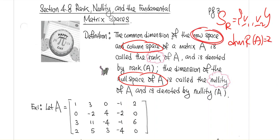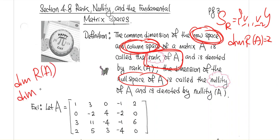The dimension of the row space and the dimension of the column space are always the same — we will show why shortly. That common number is known as the rank of A. So rank of A is the dimension of both the row space and the column space of A. The dimension of the null space also has a special name: it is called the nullity of A.